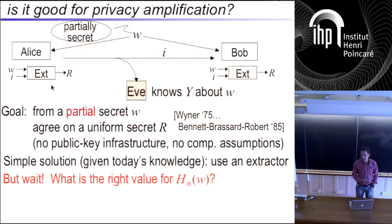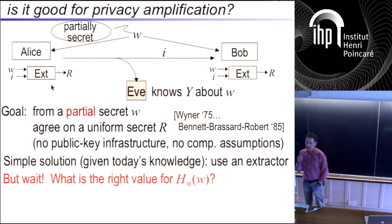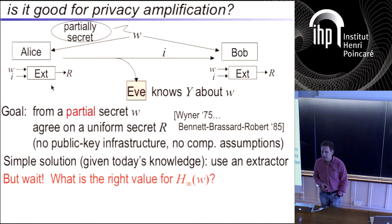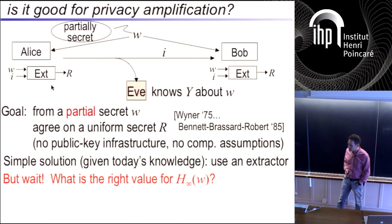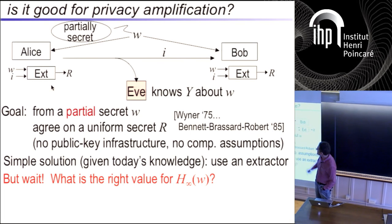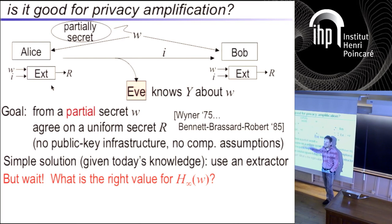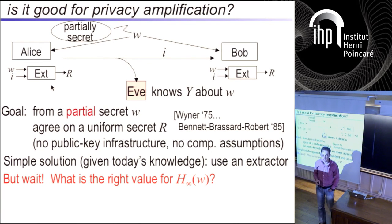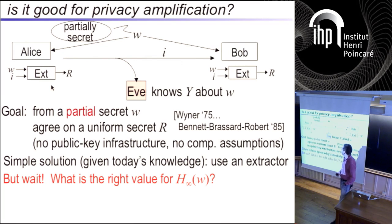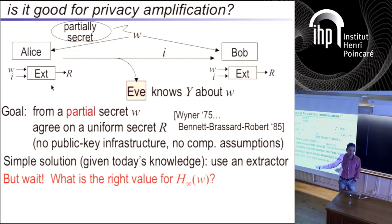I'm going to talk for the next 50 minutes with a bunch of examples, and Niftah will come back for the last 50 minutes after people get more caffeinated. Let's remember where we were. We said: imagine Alice and Bob share a partially secret string W — there are many situations when this happens — and they want to agree on a fully random string R. Extractors are great for that; they convert min-entropy to randomness.